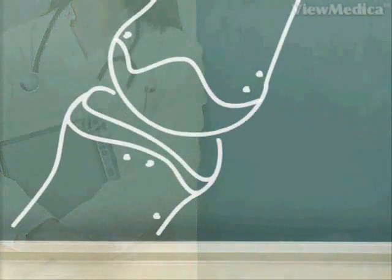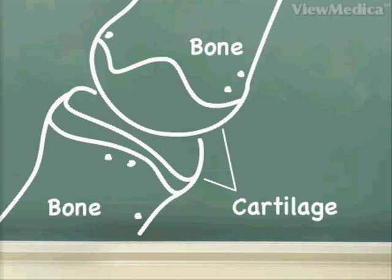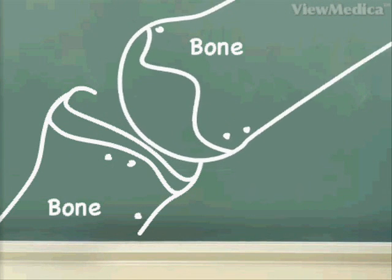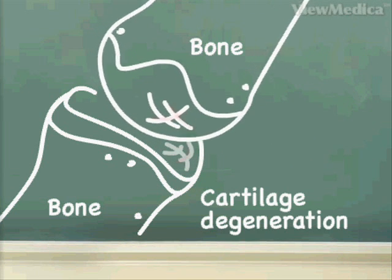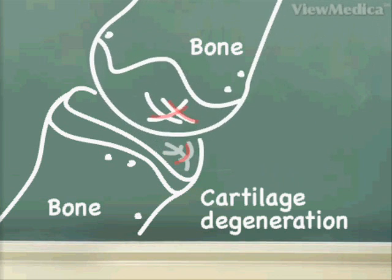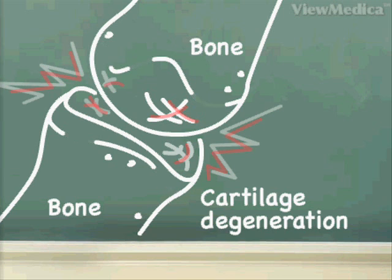As our bodies age, the cartilage that lines the ends of our bones begins to weaken and can wear away. In the joints, where the ends of the bones meet and rub against each other, this loss of cartilage can lead to inflammation and pain. Eventually, the cartilage may completely degenerate, allowing bone to rub directly against bone, causing further pain and difficulty with motion.